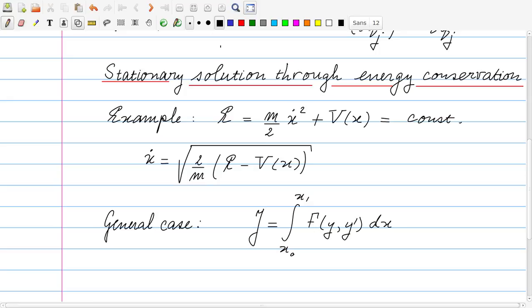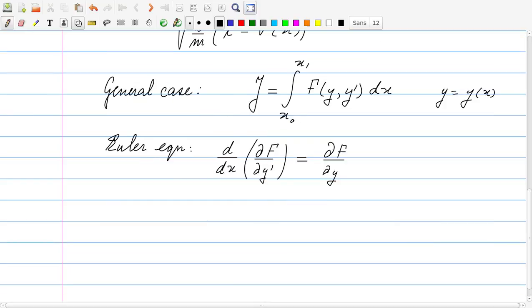Let us now formulate the problem more generally. We are interested in a functional called j, and this j is defined as an integral, in this case not over time, but we call it more generally x, over the variable x running from x0 to x1. And instead of the Lagrangian, we write the integrant as a function f, which depends on y and y-primed, and y is a function of x. For this problem, the Lagrange equation, which we now call Euler equation, is d/dx of df/dy' is df/dy. So this is the form of the Lagrange equation in classical mechanics.